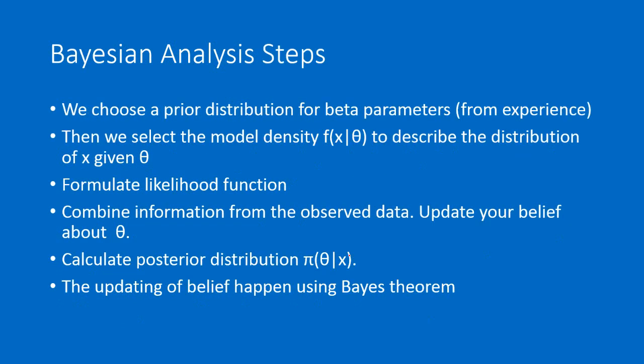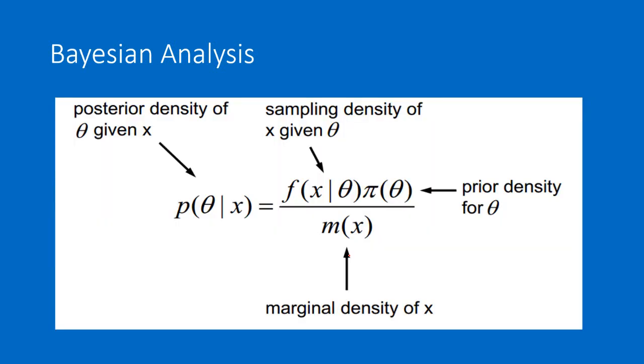The estimation process works as follows. First, we choose a prior distribution of the beta parameters — for example, the slope coefficient or intercept in a regression model. Then we select a model density: given assumed theta values, we simulate what values x will take. We then formulate the likelihood function, combining information from the observed data, and compute the posterior distribution — theta given x. So it becomes entirely the reverse: given the observed data x, what are the theta values? This is how we update the prior.